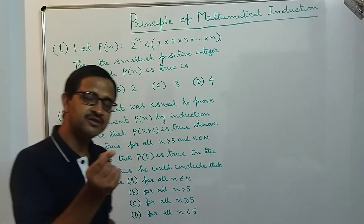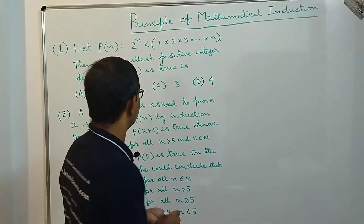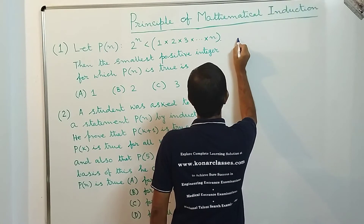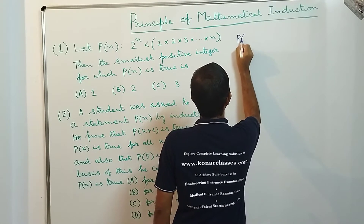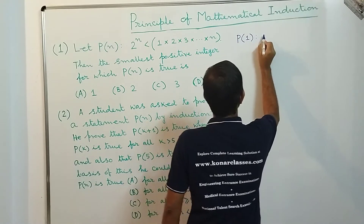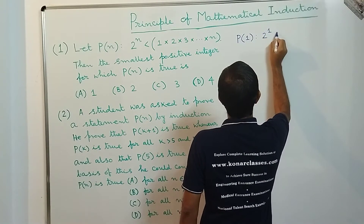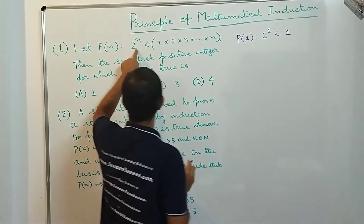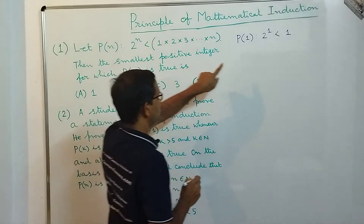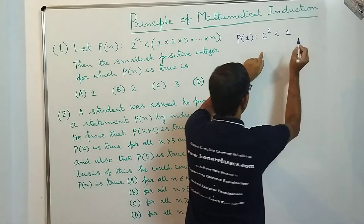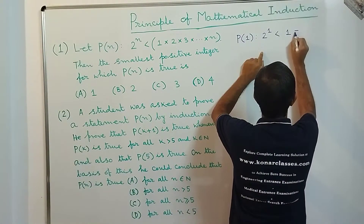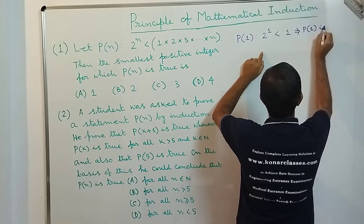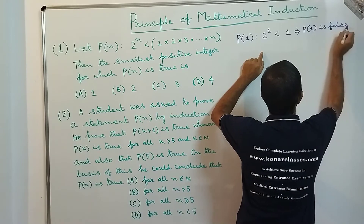The positive integers start with 1, so let's check P(1). P(1) stands for 2^1 < 1, which means 2 < 1 — that is not true. So P(1) is false.